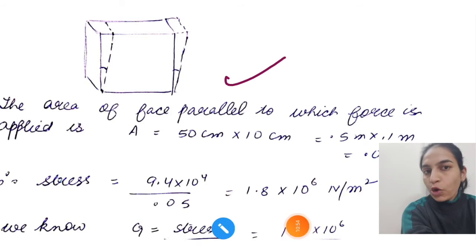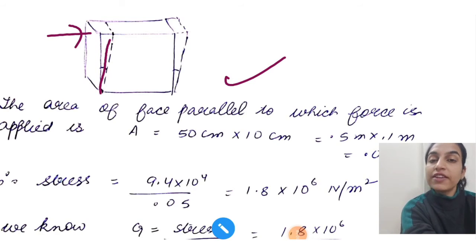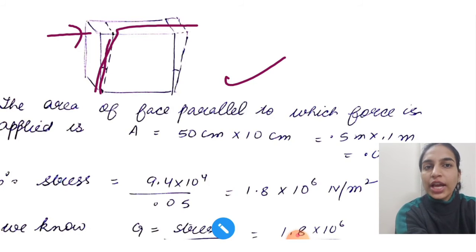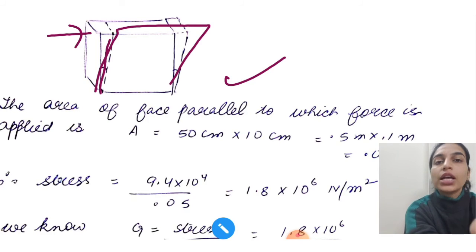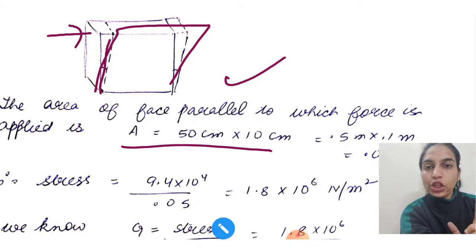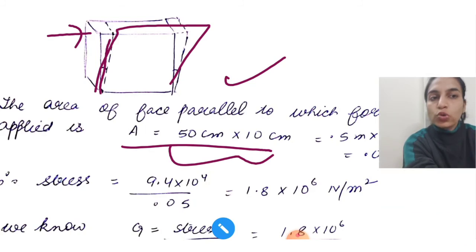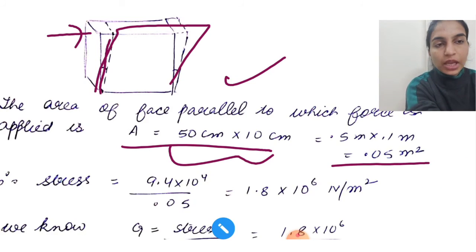This is the block given. This is the narrow surface, there is force applied. Obviously there will be change here, this is the change. So the area of the face which is parallel to the force applied - you have to calculate the area, the cross-sectional area where force is applied. The force applied is on this area. You have to convert to meters, and the answer is 0.05 meter square. Stress is force upon area, so it is 1.8 into 10 to the power 6.